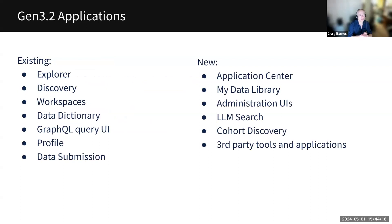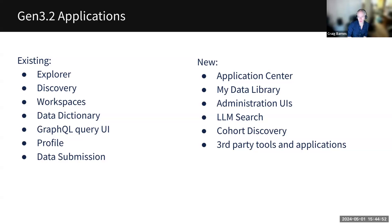When we talk about applications, we're working on the existing ones — Explorer (the cohort builder), Discovery, Workspaces, Data Dictionary, the GraphQL query interface, Profile, and Data Submission. We're not trying to cut features; we're trying to make it as complete as possible. New planned additions include the Application Center or Analysis Tool Center, My Data Library, some administration UIs (starting with one for perusing user YAML files), advanced search, cohort discovery, and support for third-party tools and applications that could work across multiple commons and be plug-and-play compatible with Gen3.